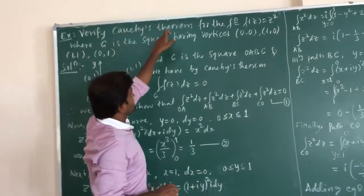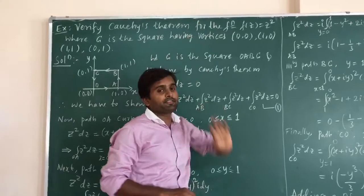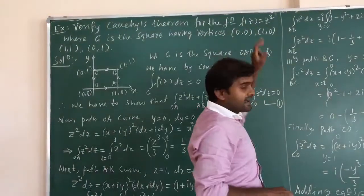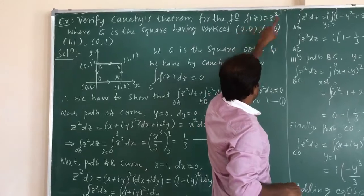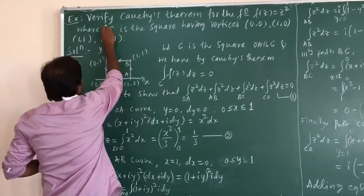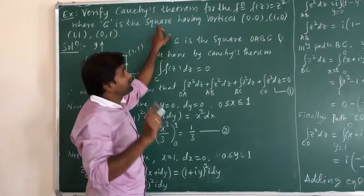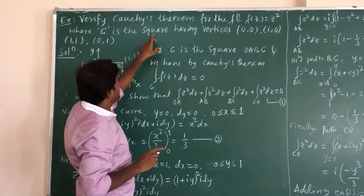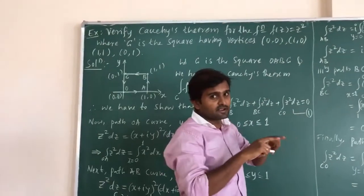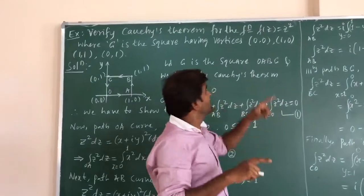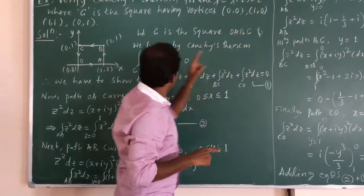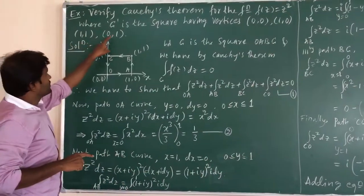Verify Cauchy's theorem for the function. We have a complex function f(z) = z², where C is the path given as a square having vertices: (0,0), (1,0), (1,1), and (0,1).